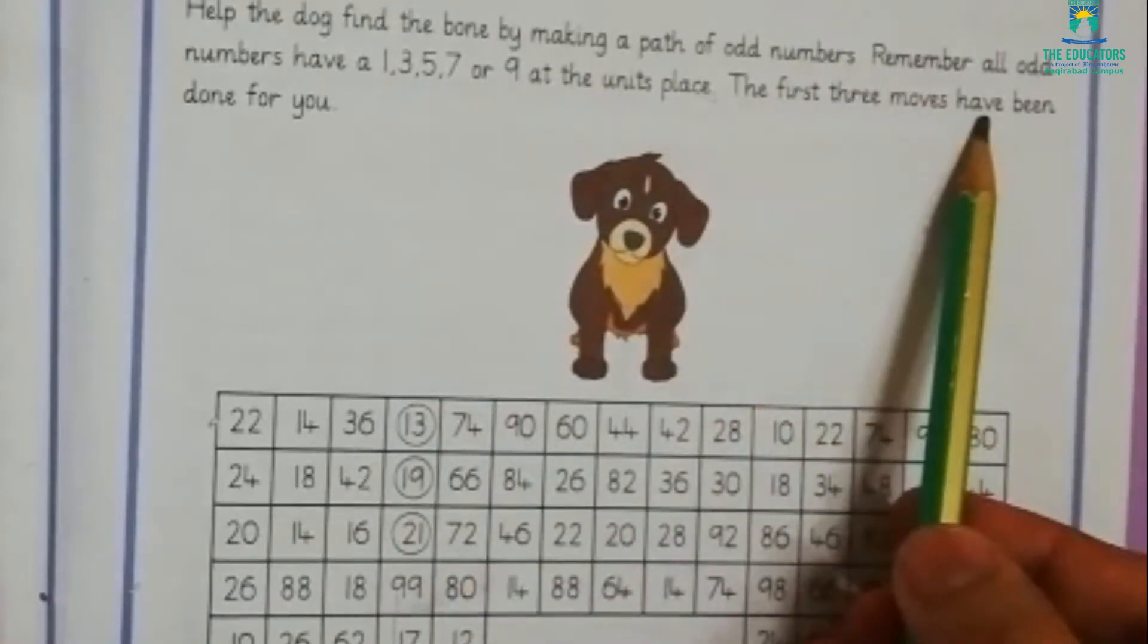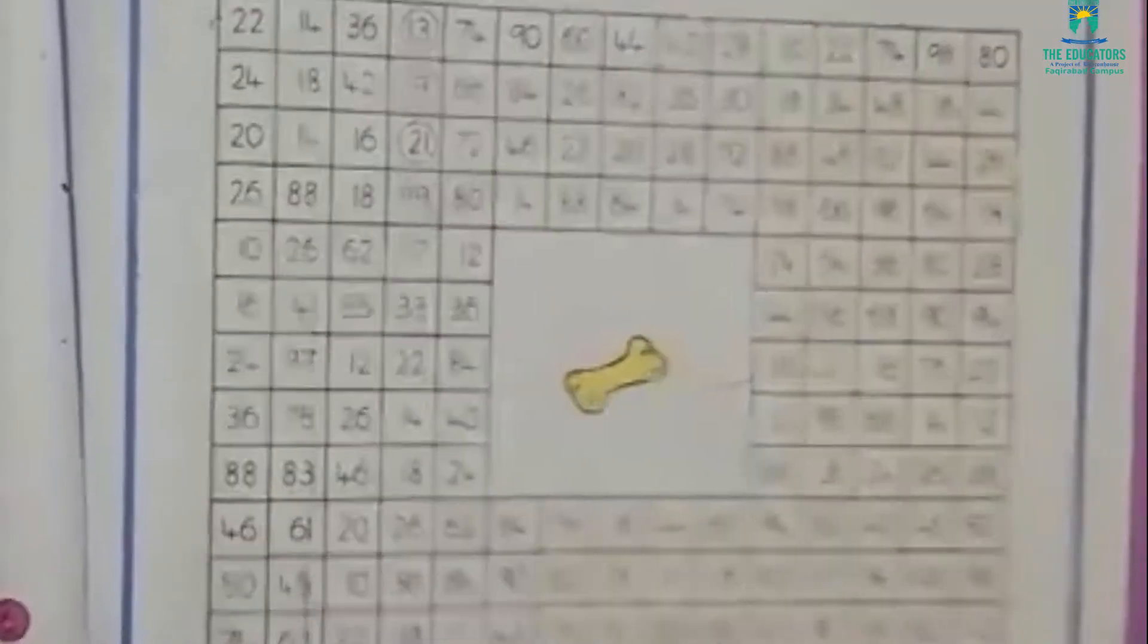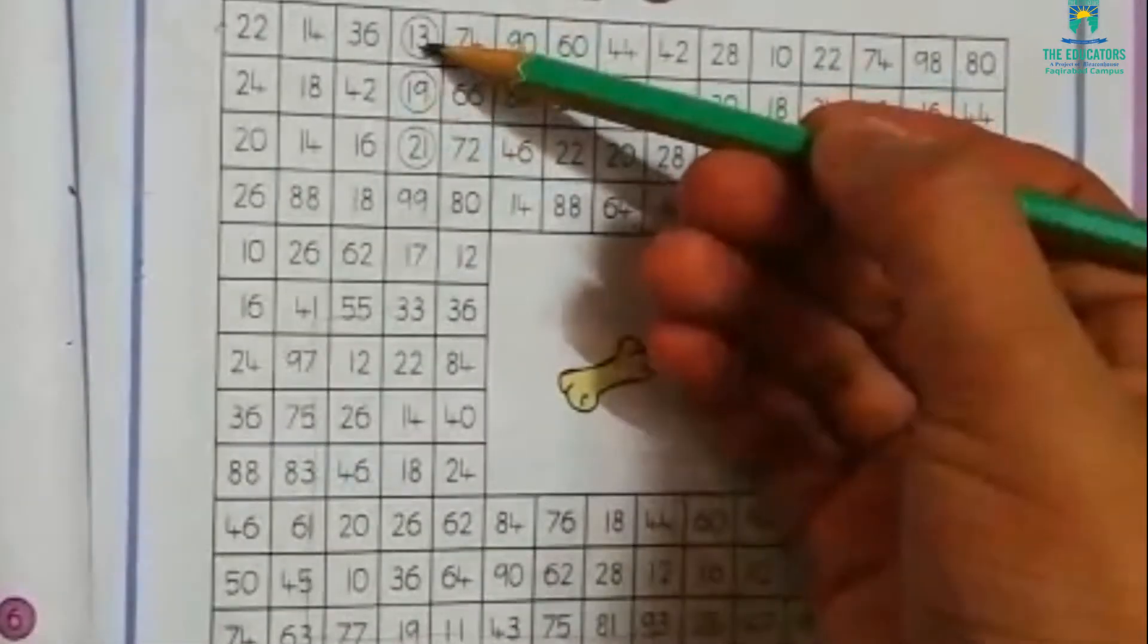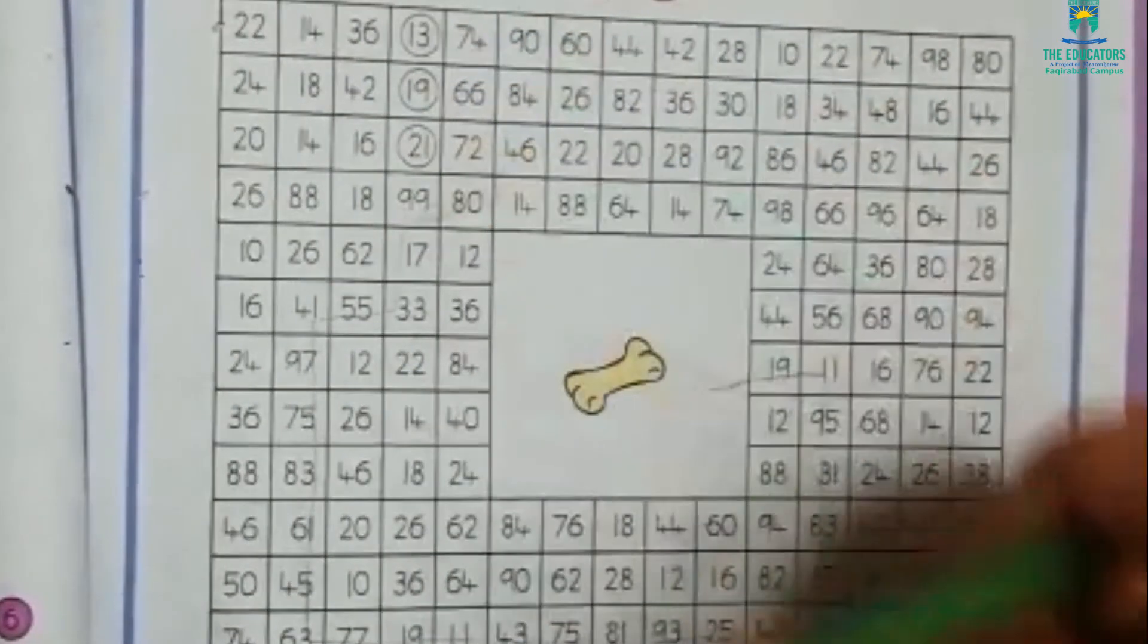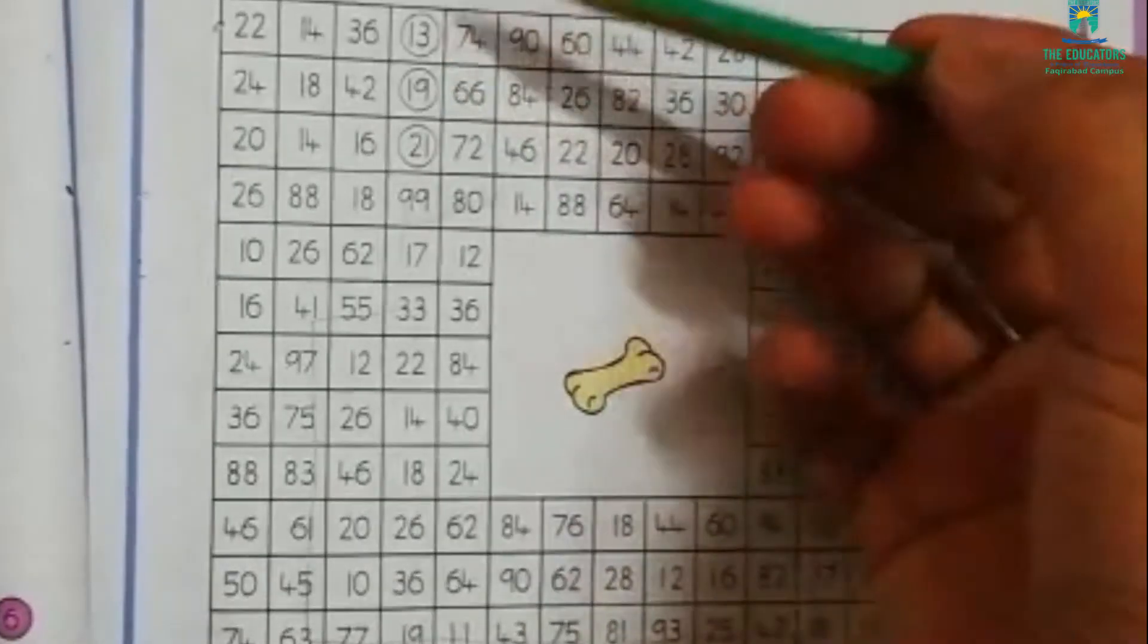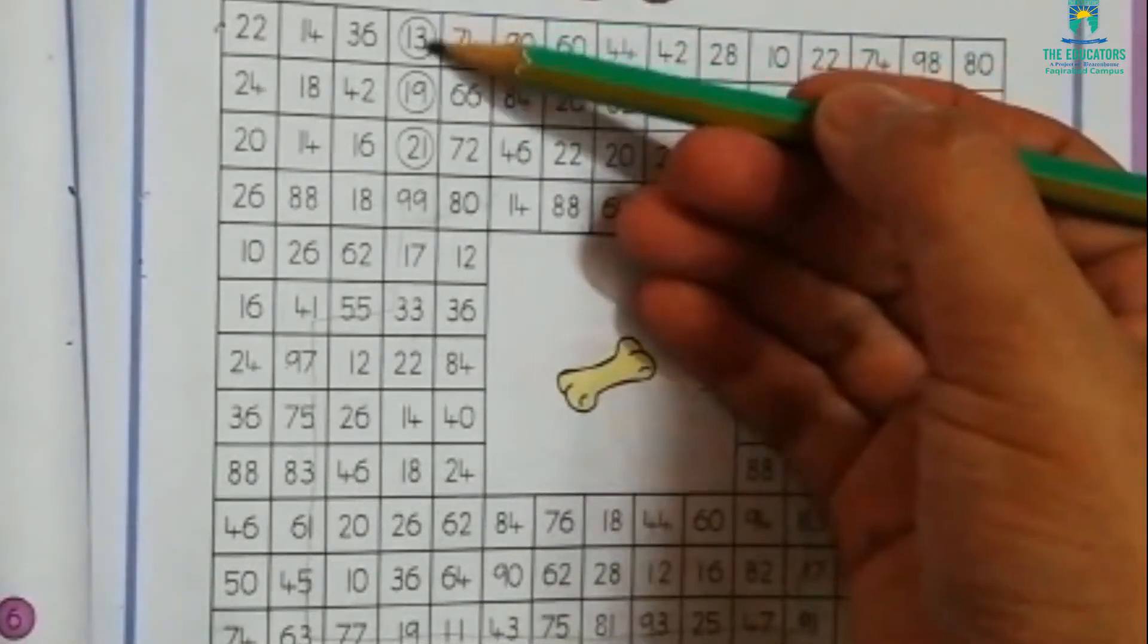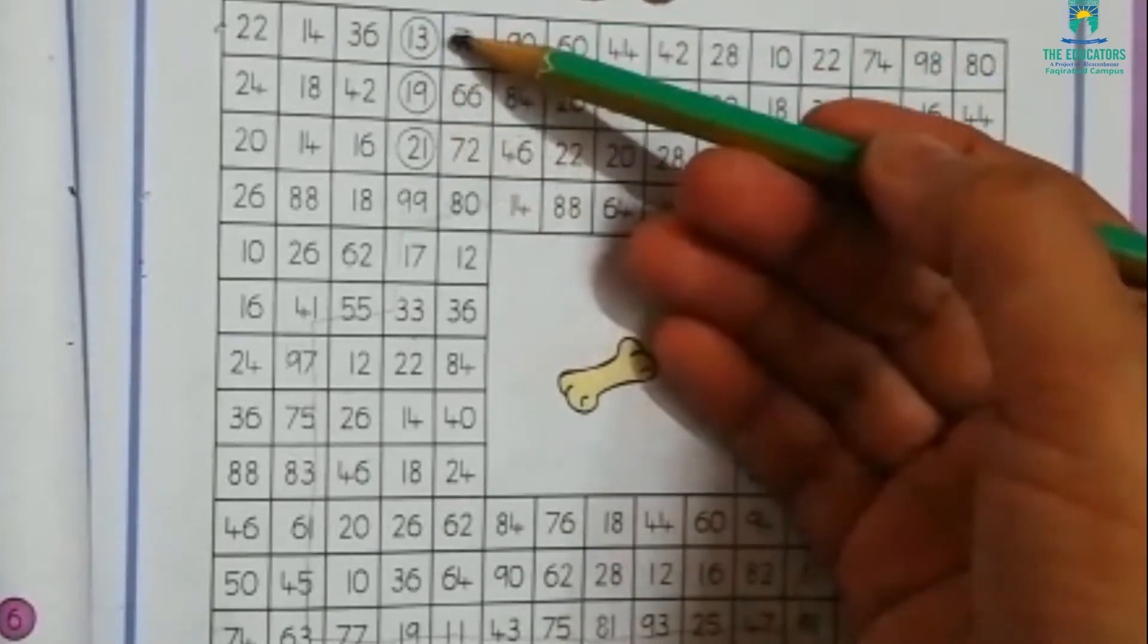Look at here. First three moves are here: 13, then 19, and 21. My dear students, you can see that in first number we have 3, in second number we have 9, and in third number we have 1 in units place.